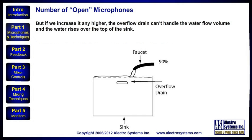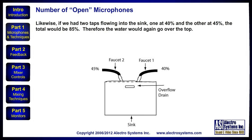But if we increase it any higher, the overflow drain can't handle the water flow volume, and the water rises over the top of the sink. Likewise, if we had two taps flowing into the sink — one at 40% and the other at 45% — the total would be 85%. Therefore, the water would again go over the top.